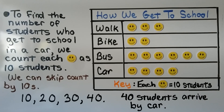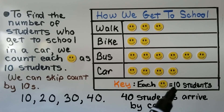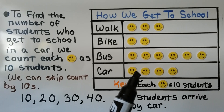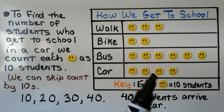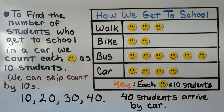To find the number of students who get to school in a car, we count each smiley face as 10 students because the key tells us that each one is equal to 10. We skip count by tens: 10, 20, 30, 40. We know 40 students get to school in a car.